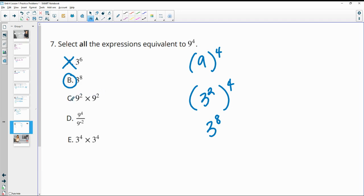9 squared times 9 squared. So 9 squared times 9 squared. Then we know we can just add these. So this is the same as 9 to the fourth power, which is what we have. So this one is good.